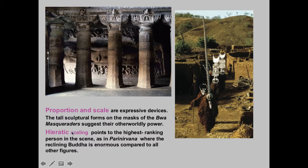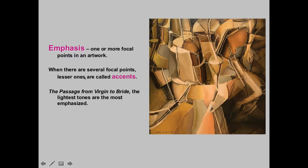That is exactly what is called hieratic scale or hierarchical scale. The Buddha is the most important piece here. Emphasis refers to one or more focal points in an artwork. When you have several focal points, the lesser ones are called accents. In this piece, the light areas are what we'd call the emphasis, though usually you have a central figure or something like that as a clear focal point.